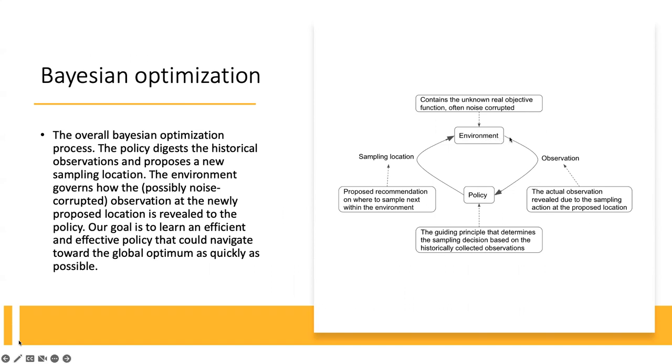So once we identify a set of parameters we want to test out, then this gives us an observation. This observation comes when we sample the action at the proposed location. So the action is to test certain parameter values and then the result is the observation itself. This observation is going to be passed to the policy, which is the central intelligence we are developing to guide the search. This policy determines where to sample next, what parameter values to assess in the next round.